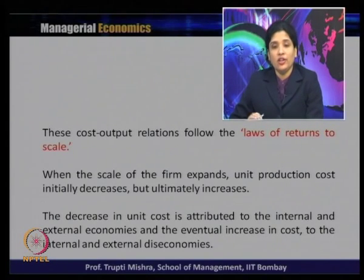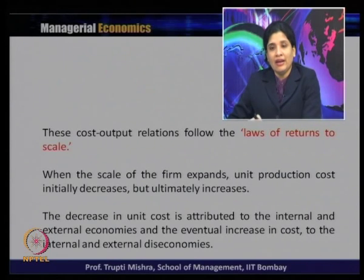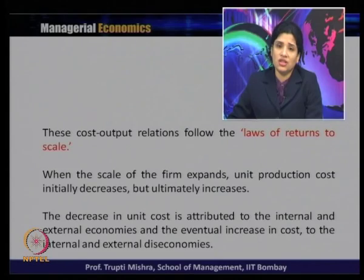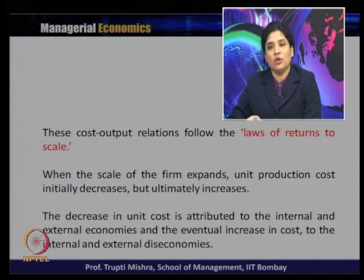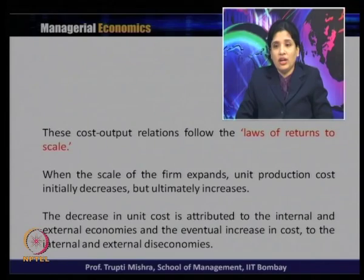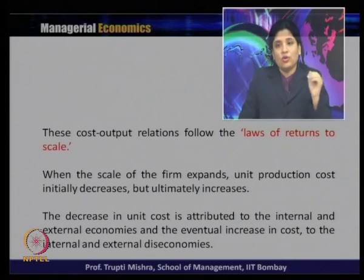When the scale of a firm expands, unit production cost initially decreases but ultimately increases beyond the minimum cost level. The decrease in unit cost is attributed to internal and external economies of scale. Eventually, when costs increase, that is because of diseconomies — again of two types: internal and external diseconomies.